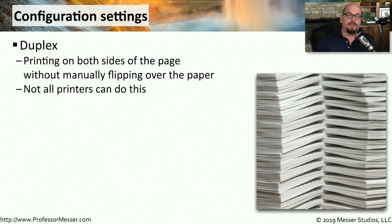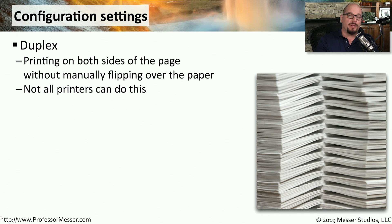When you send print jobs to these multi-function devices, it may ask if you want to print in duplex mode. Duplex means that the printer will print on both sides of the paper without you having to manually flip the paper over. There is usually some hardware inside of the multi-function device that provides this duplexing capability, which means not all multi-function devices can print on both sides. But if it is available, it will be an option inside of your printer driver.